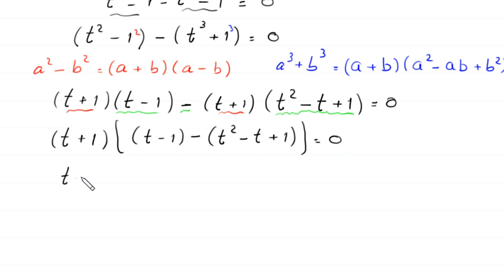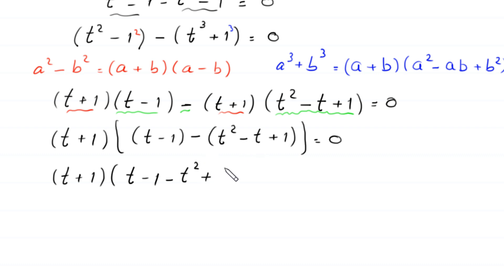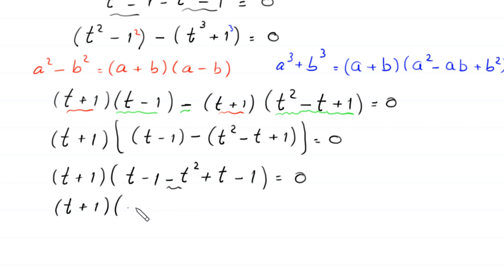Next, we remove the inner brackets. This gives: t minus 1, then negative times t squared becomes negative t squared, negative times negative t becomes plus t, and negative times plus 1 becomes negative 1. So we have: (t plus 1)(negative t squared plus 2t minus 2) equals 0.